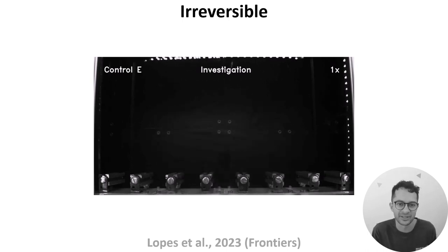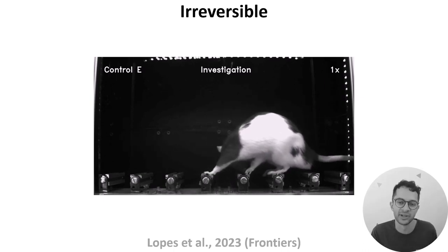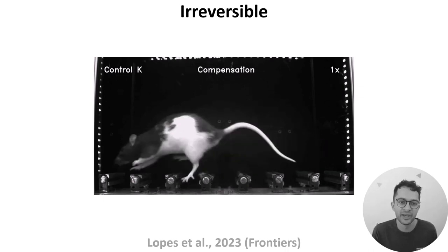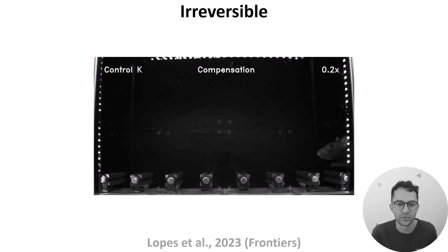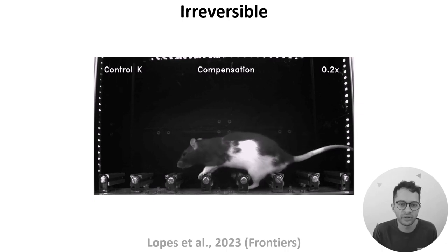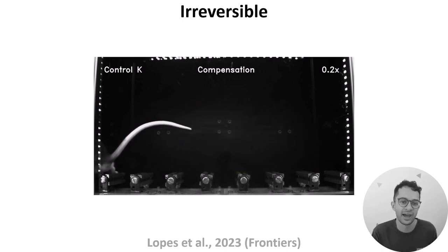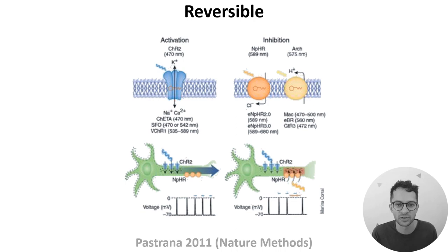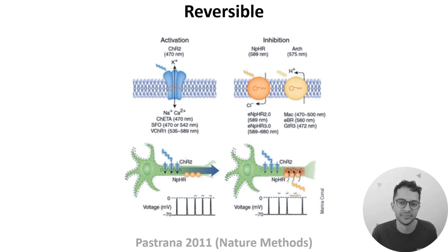More broadly, in the context of this video, this paper nicely illustrates that while we may assign roles to neurons or brain areas based on observing their activity, we can only really confirm or refute their roles by manipulating them. However, we don't always have to use irreversible manipulations, as there are reversible methods available too. In humans, one approach is called transcranial magnetic stimulation or TMS, which uses magnetic fields to alter the activity of brain regions.